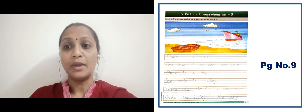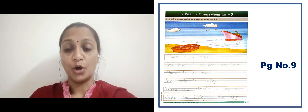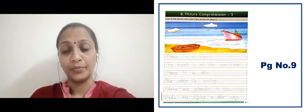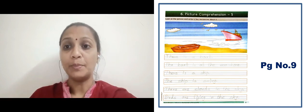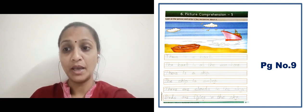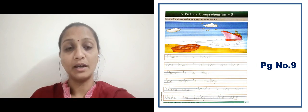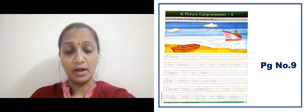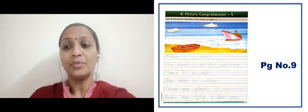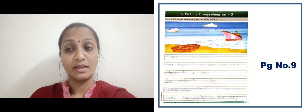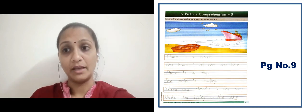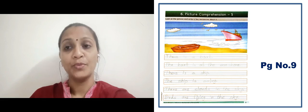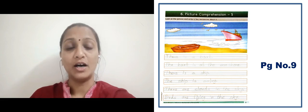Here there is a boat and the boat is on the ground. Here there is a ship — what is the ship doing? It is on the water. There are clouds in the sky. Birds — they are on the sea. In this way you have to say sentences about this picture.